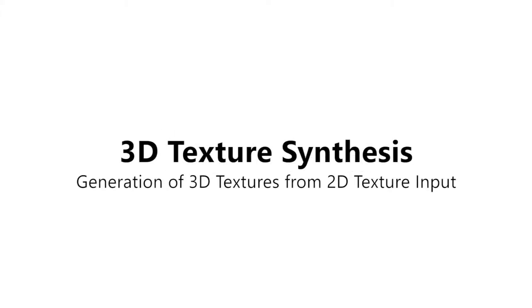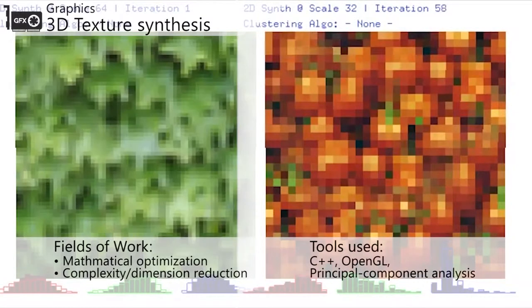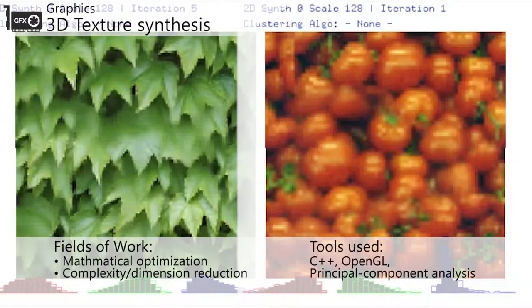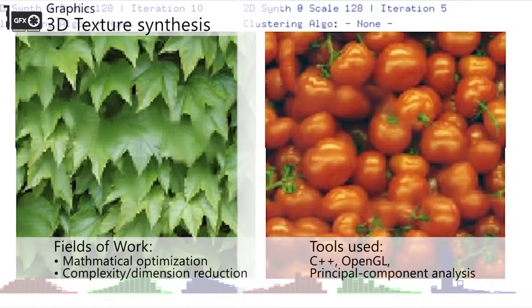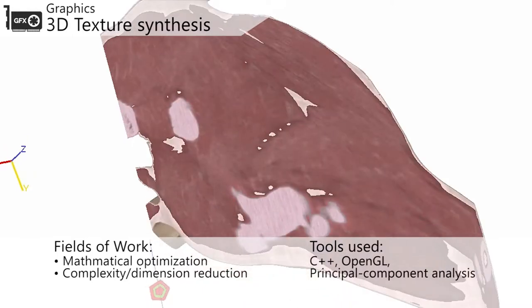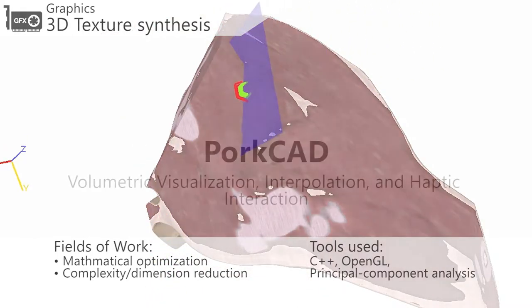Graphics — 3D texture synthesis: generation of 3D textures from 2D texture input. The wide availability of 2D textures makes them ideal sources of inspiration to generate plausible 3D textures. I reimplemented a state-of-the-art algorithm and applied it for the purposes of creating more realistic tissue textures.